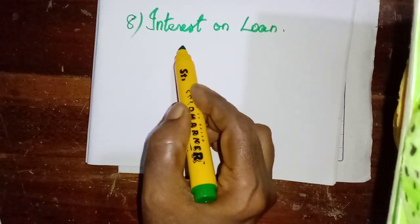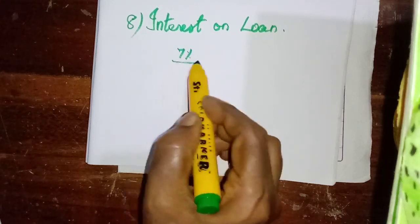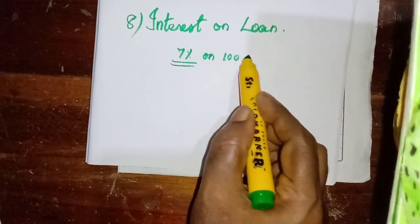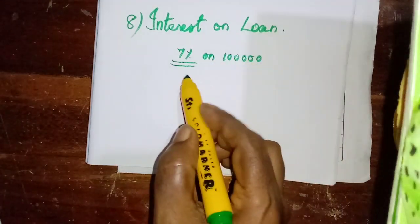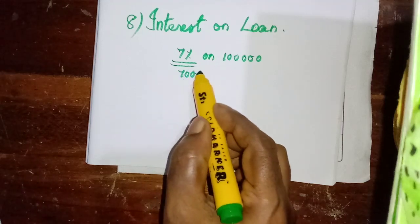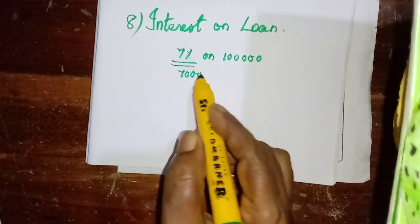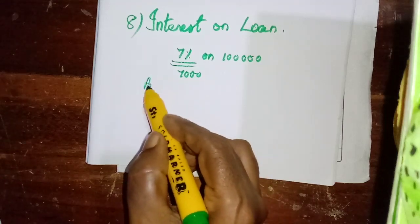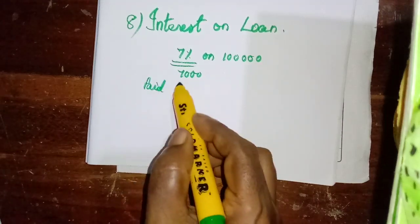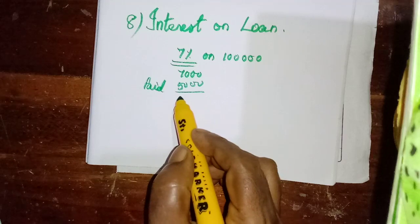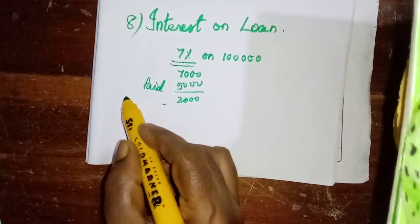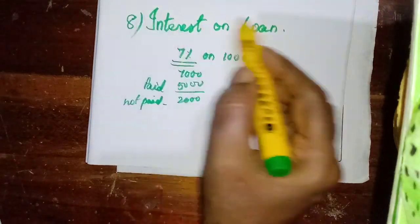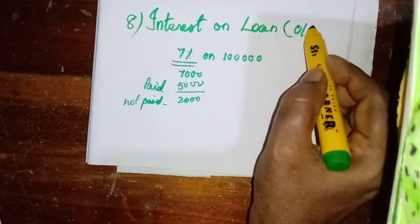If it is 8% or 7%, we need to calculate — for example, 7% on 1 lakh will be 7,000. How much is paid in the trial balance? The paid amount will be given — say 5,000 is paid. So the remaining 2,000 is not paid. This is outstanding — this is the outstanding expense.